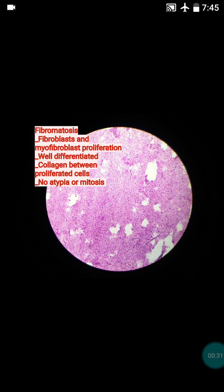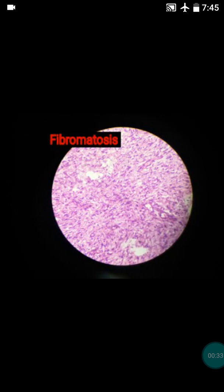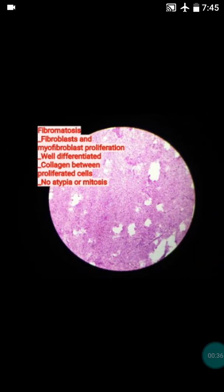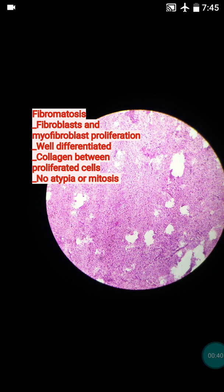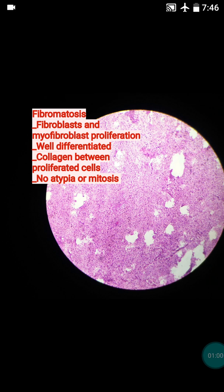It can develop in the shoulder, back, and thigh — anywhere. For the diagnosis of fibromatosis, remember these four points: first, there should be presence of fibroblast proliferation; second, the cells should be well differentiated and bland; third, there should be absence of atypia and mitosis; and fourth, there is presence of collagen in between the proliferated cells.